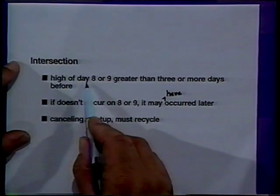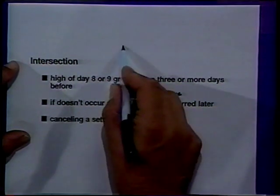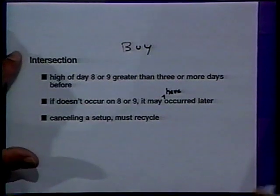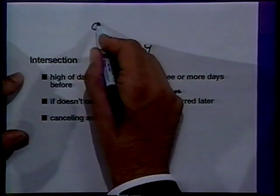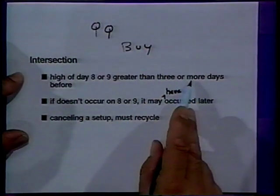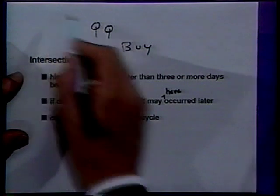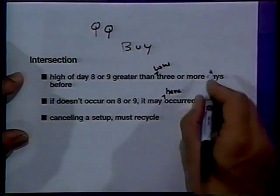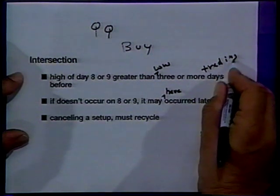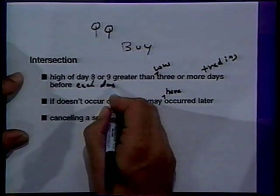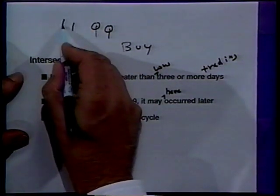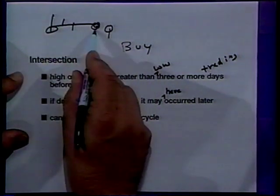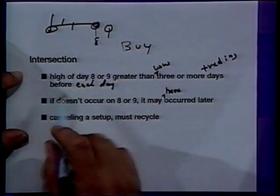Now let's go over this once again on the intersection. The high of day eight or day nine is greater, this is for a buy, the high of day eight or day nine is greater than the low, three or more trading days before each day. And as I told you before, if this day's high, you go back, is greater than the low three days back, day five in the setup, you qualify for intersection.